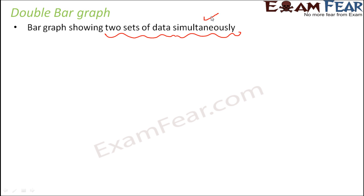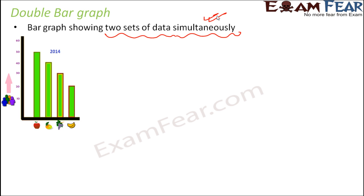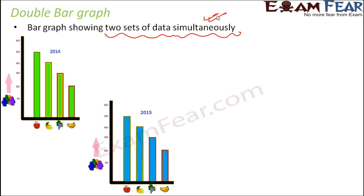Now what do we mean by two sets of data? Let us take this example. Let's say that this survey, which was done by the teacher about the favorite fruits in her classroom, the same survey was done in two consecutive years.